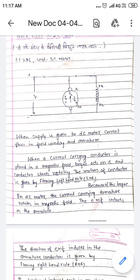When a current carrying conductor is placed in a magnetic field, torque acts on it and conductor starts rotating. The motion of conductor is given by Fleming's left hand rule.